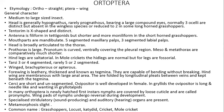Mouthparts are mandibulate type — a very primitive type of mouthparts in which all parts are present: labrum, mandible, maxillae, labium, and hypopharynx. Five-segmented maxillary palps and three-segmented labial palps are present.